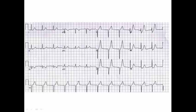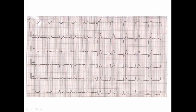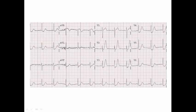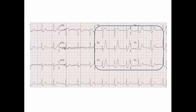We can see in this ECG that the patient has upsloping ST depression and hyperacute T-waves more than two-thirds of the QRS complex amplitude — this is De Winter syndrome. In the chest leads, there is upsloping ST depression and hyperacute T-waves from V3 to V5. In another ECG example, the pattern is present from V2 to V6, which is also consistent with De Winter syndrome.